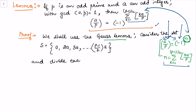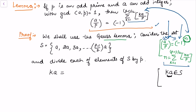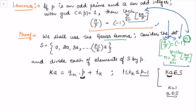We consider the set S and divide each element by p. Elements of S are of the form ka. Applying the division algorithm, ka = qk · p + tk, where the remainder tk satisfies 1 ≤ tk ≤ p-1. The minimum remainder is 1 because gcd(a, p) = 1, so the remainder cannot be 0.